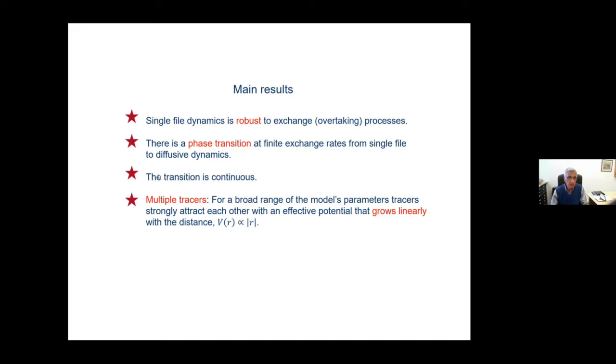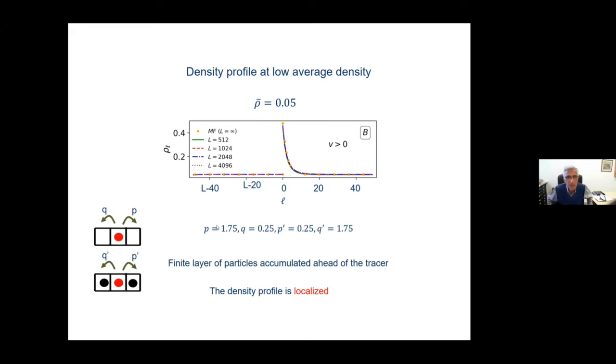And the other thing is, if you have more than one tracer, you have many tracers, it turns out they attract each other. Although there is no direct force between them, but through the fluid, through the other particles around, they attract each other. And in fact, we managed to calculate the potential, the interaction potential, the effective potential attracting them, and it goes linearly with R. So it's a very strong attraction. Okay, so let me just give you the results and give you some feeling of how it comes about.